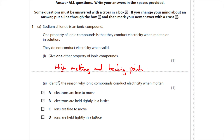The second part: identify the reason why ionic compounds conduct electricity when molten. It's not about the electrons — it's about the ions that are then free to move. The positive and negative ions are free to move, so the answer is C.